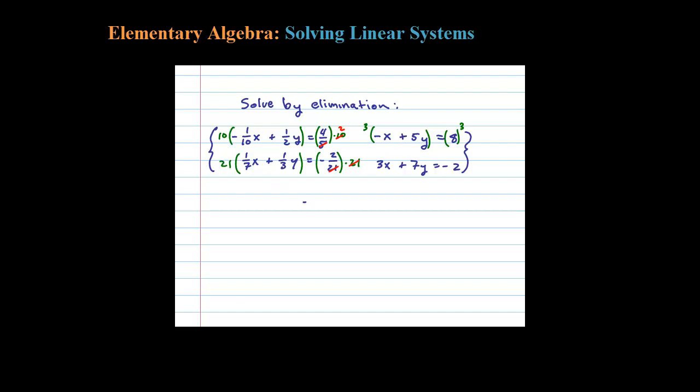I get the equivalent system: negative 3x plus 15y equals 24, that's the top equation. Now let's rewrite the bottom equation, I'm not going to modify that because it's already lined up to eliminate. You can see if I add these two together, the x terms add to 0, so that leaves me with 22y equals 22. Dividing both sides by 22, y equals 1.